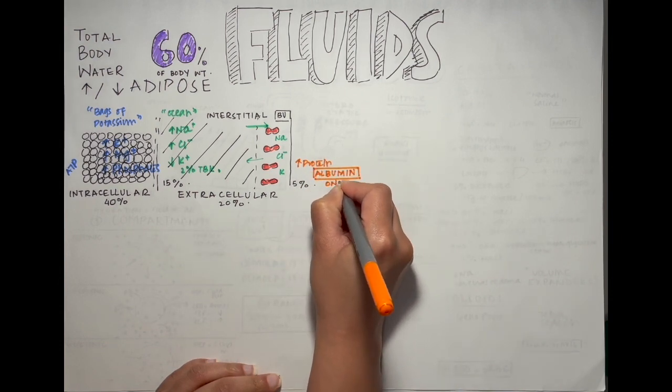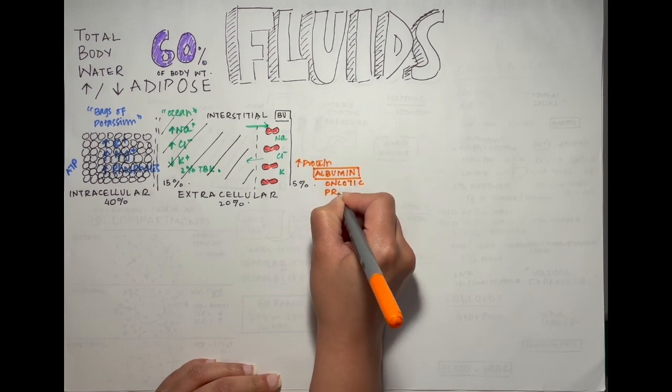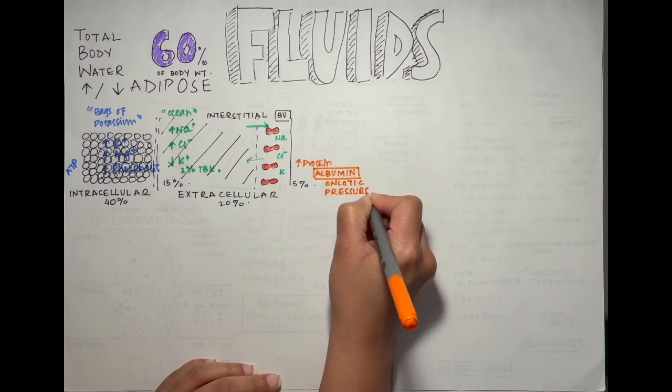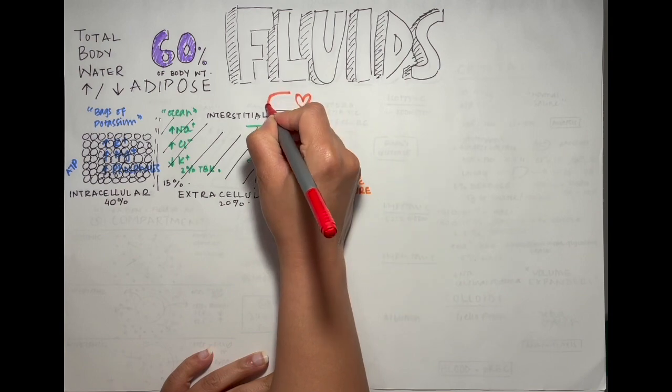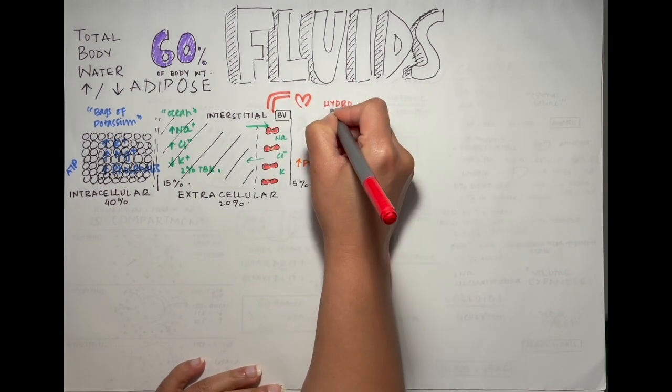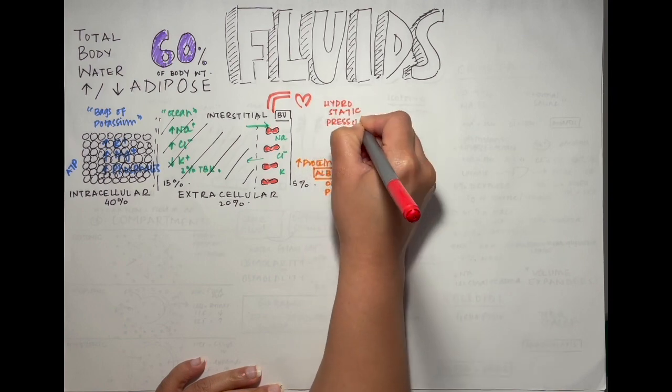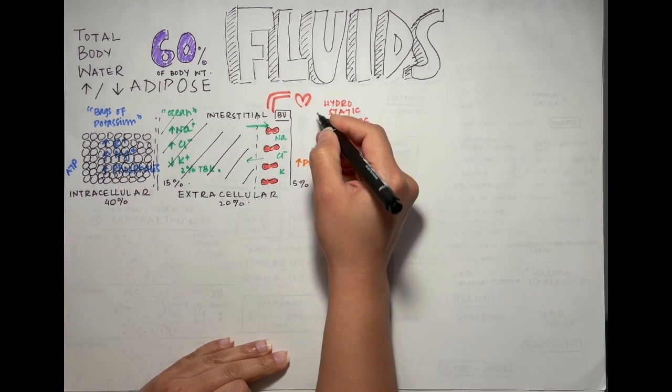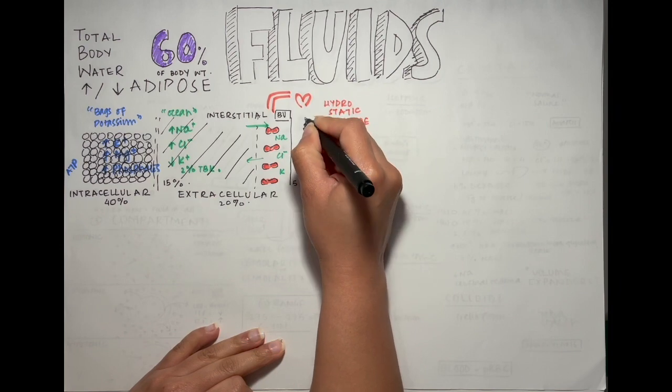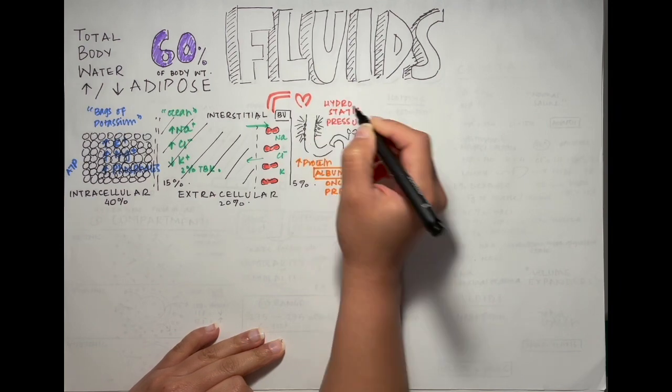So what happens is that the heart pumps blood into the capillaries under a lot of pressure called hydrostatic pressure. It goes into the tissues, surrounds them, gives the cells its nutrients, and then is attracted back into the blood vessels by the oncotic pressure exerted by the albumin. You can think of it kind of like a pump with a leaky hose attached to it.